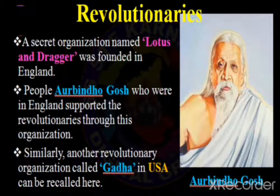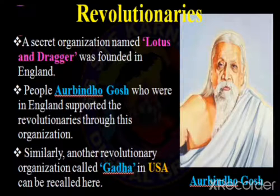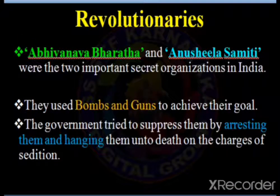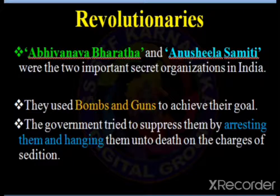A secret organization named Lotus and Dragon was founded in England. People like Aurobindo Ghosh who were in England supported the revolutionary group. Similarly, another revolutionary organization called GADA in the USA can be recalled here. In other countries also, secret associations were there supported by revolutionary leaders. In India, Abhinav Bharata and Anushilana Samithi were the two important secret organizations.